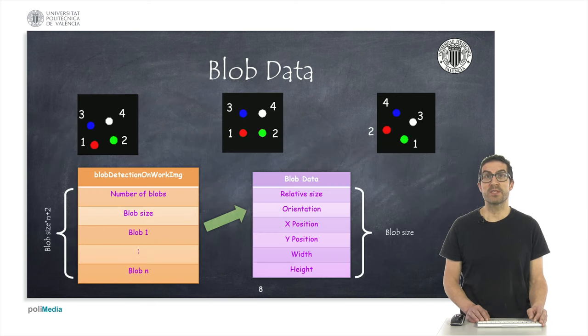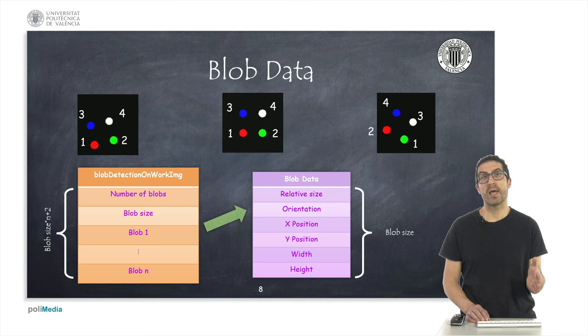The blob detection on work image function returns information with a very specific structure that is documented in the function help. Every time we read from the vision sensor, we will get this information, and specifically, it returns a table with the number of blobs it has detected, as well as the blob size, in terms of the number of fields that each blob contains. And also, this will help us to properly separate and distinguish between all blobs, because they are returned in a single table.